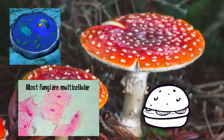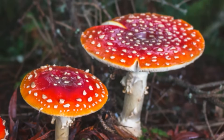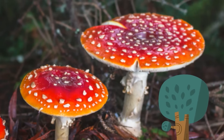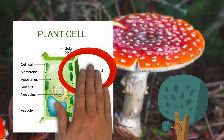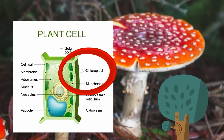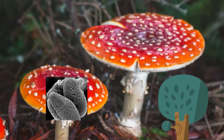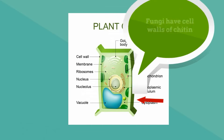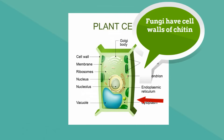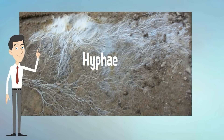Most fungi are multicellular, but some like yeast are unicellular. Fungi cannot move about. Fungi may look like plants, but they are different in several ways: almost all fungi do not have chlorophyll, so they cannot practice photosynthesis. They reproduce with spores, not seeds. Many fungi have cell walls made of chitin instead of cellulose. Many fungi break down decaying matter and absorb nutrients using a network of fibers called hyphae — tube-like structures that grow and cover a food source, allowing them to digest and absorb nutrients.